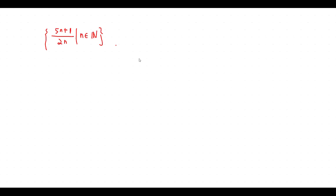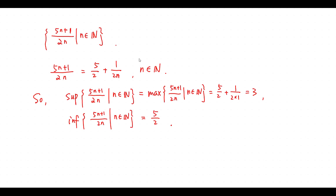Consider this set. We write this set equals this one. From this, we get the supremum of this set equals 3. The infimum of this set equals 5 over 2.